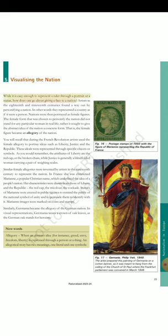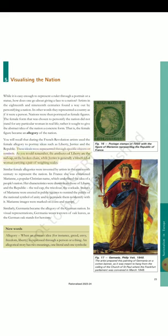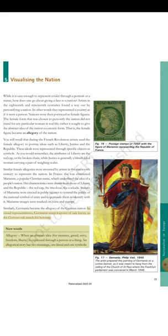Section 5: Visualizing the nation. While it is easy enough to represent a ruler through a portrait or a statue, how does one go about giving a face to a nation? Artists in the 18th and 19th centuries found a way out by personifying a nation — in other words they represented a country as if it were a person. Nations were then portrayed as female figures. The female form that was chosen to personify the nation did not stand for any particular woman in real life; rather it sought to give the abstract idea of the nation a concrete form. That is, the female figure became an allegory of the nation. You will recall that during the French Revolution artists used the female allegory to portray ideas such as liberty, justice and the republic. These ideas were represented through specific objects or symbols. The attributes of liberty are the red cap or the broken chain, while justice is generally a blindfolded woman carrying a pair of weighing scales. Similar female allegories were invented by artists in the 19th century to represent the nation. In France she was christened Marianne, a popular Christian name, which underlined the idea of a people's nation. Her characteristics were drawn from those of liberty in the Republic — the red cap, the tricolor, the cockade. Statues of Marianne were erected in public squares to remind the public of the national symbol of unity and to persuade them to identify with it. Marianne images were marked on coins and stamps.